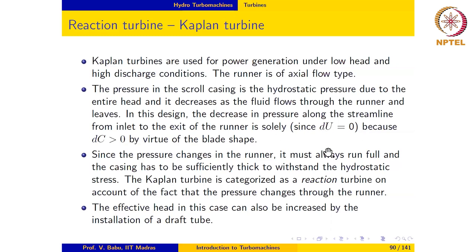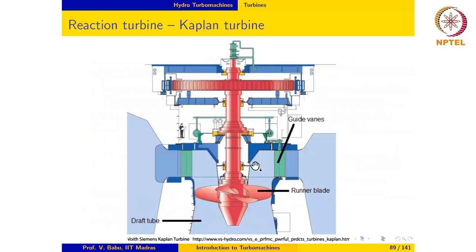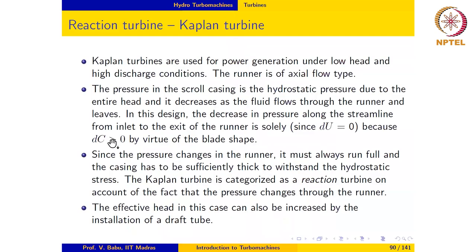In this design, the decrease in pressure along the streamline is only due to dc being positive by virtue of the blade shape. Note that du in this case is zero because it's an axial flow turbine. So if you take a streamline that passes through the rotor, there is hardly any change in the radius of the streamline. So du is zero and the change in pressure is entirely due to the increase in relative velocity across the runner. Since the pressure changes in the runner, like in the case of the Francis turbine, the turbine must always run full and the casing also has to be sufficiently thick to withstand the hydrostatic stress.